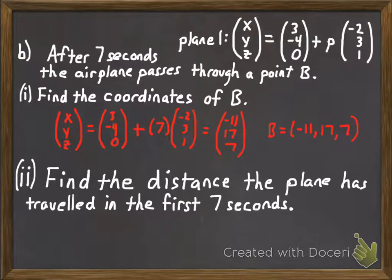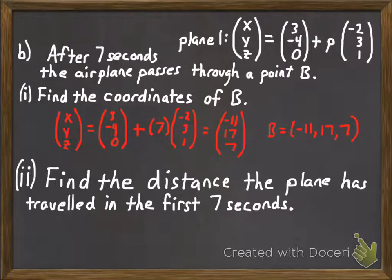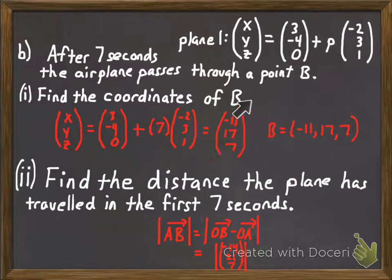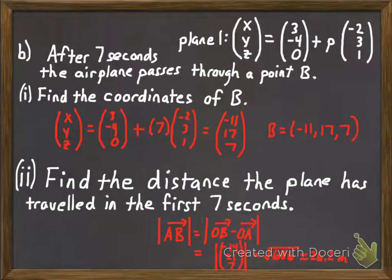To find the distance the plane has traveled in the first seven seconds, we find the magnitude of vector AB, which is vector OB minus vector OA. That gives us the vector from A to B, and its magnitude equals √686, or approximately 26.2 meters.